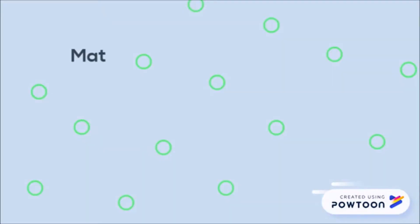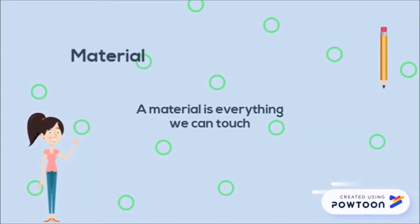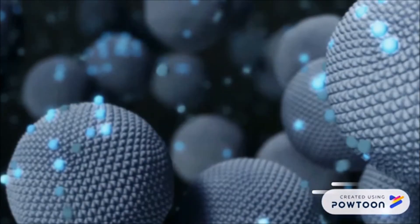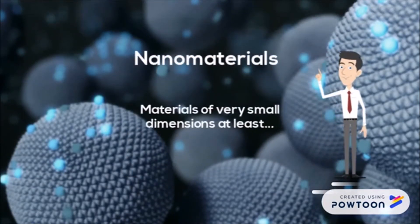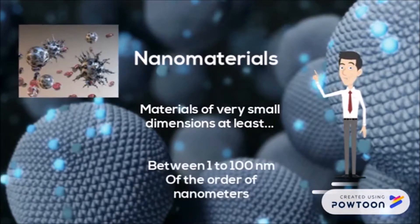A material is everything we can touch: construction materials, kitchen, chemistry, school, and even material of our body. Nanomaterials are materials of very small dimensions, at least between 1 to 100 nanometers.